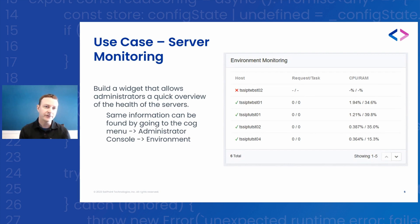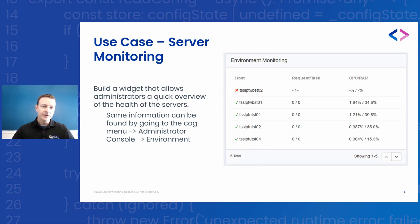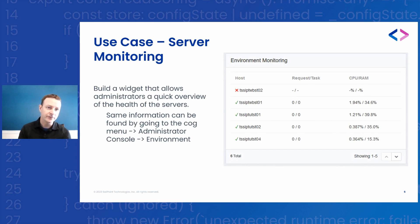So what I built was a widget that calls a REST service that queries those server objects and returns the different attributes for each server. If the server is down, it'll float to the top of the list. It just gives you a quick overview of what's up and running in your environment. Some customers have external monitoring tools, but in this particular case we went a few days without noticing that one of our batch servers was down, so we weren't fully optimizing our tasks and partitions. This same information is available out of the box via the cog menu, administrator console, and environment — this widget just reduces the number of clicks.